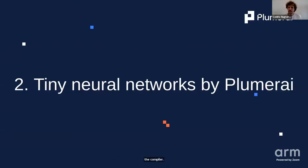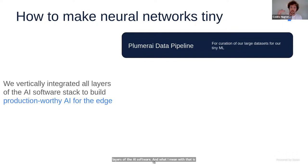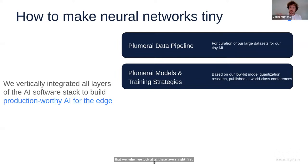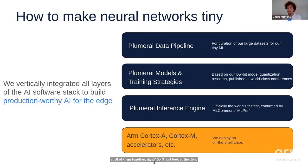Now let's talk about Plumeri's neural networks. We make them tiny by vertically integrating all layers of the AI software stack: the data pipeline, models and training strategies, the inference engine, and the actual hardware. We always look at all these layers together — don't just fiddle with model quantization without considering the inference engine and hardware. By vertically integrating all of these, that's how we achieve truly efficient neural networks.